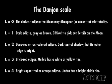Finally, Danjon assigned the brightest eclipses the number four. The moon appears bright copper red or orange. The umbra also has a bright bluish rim.